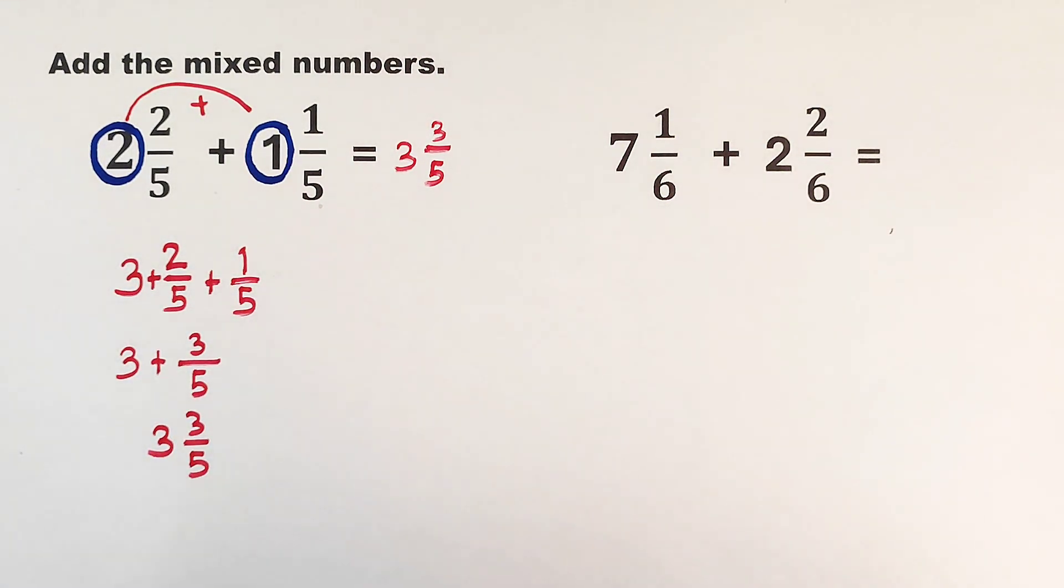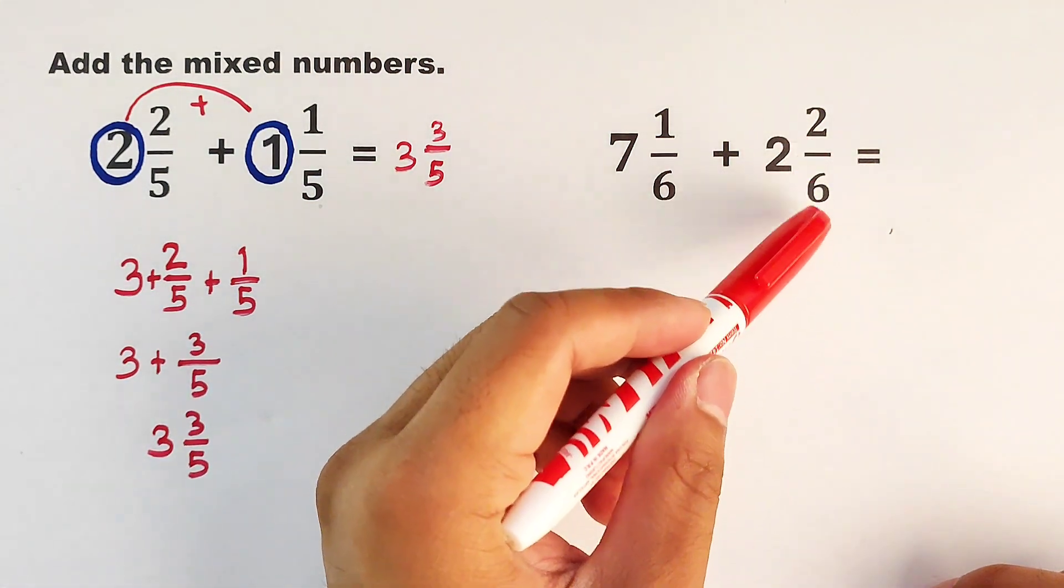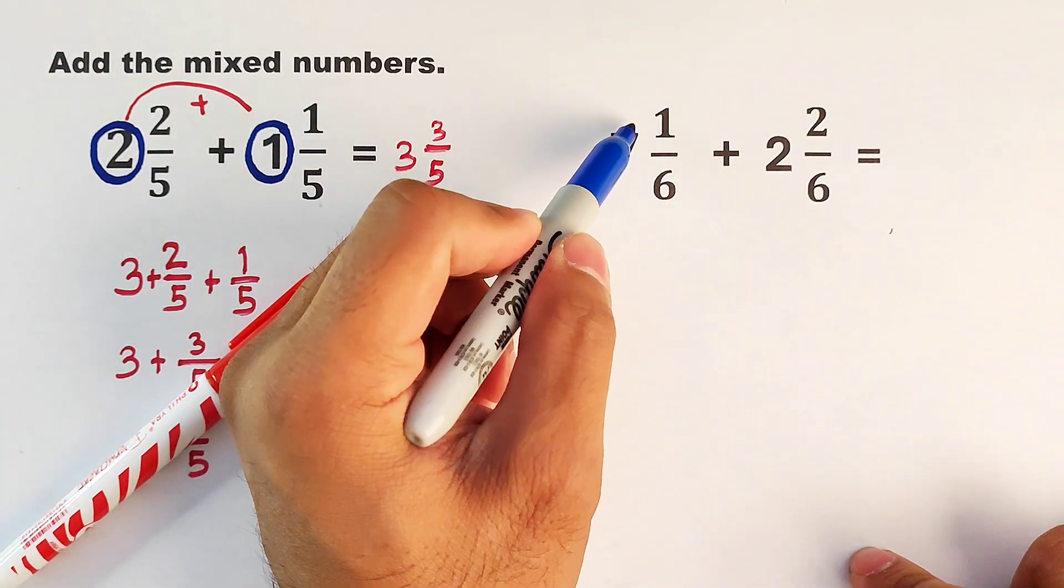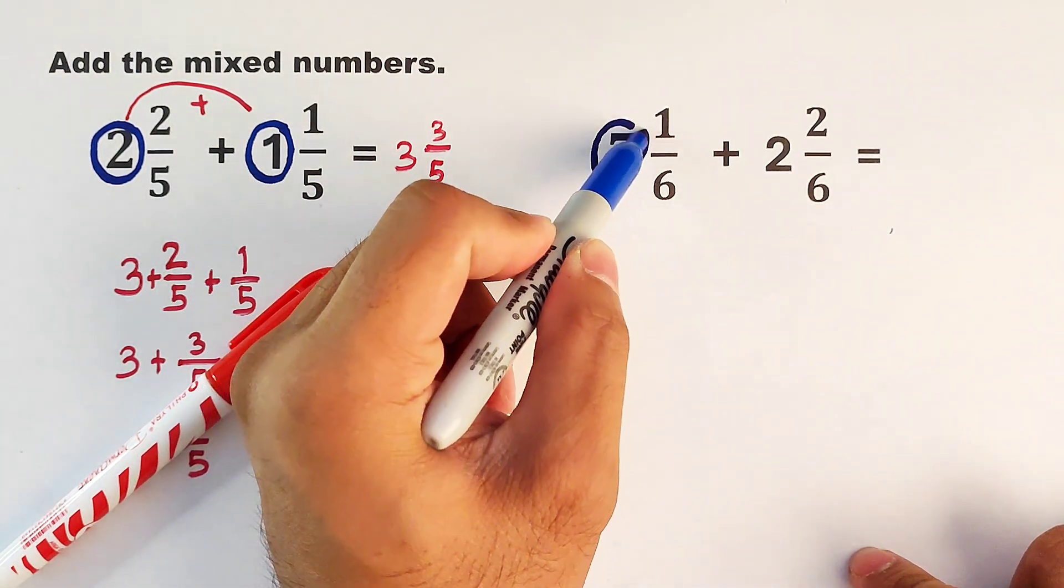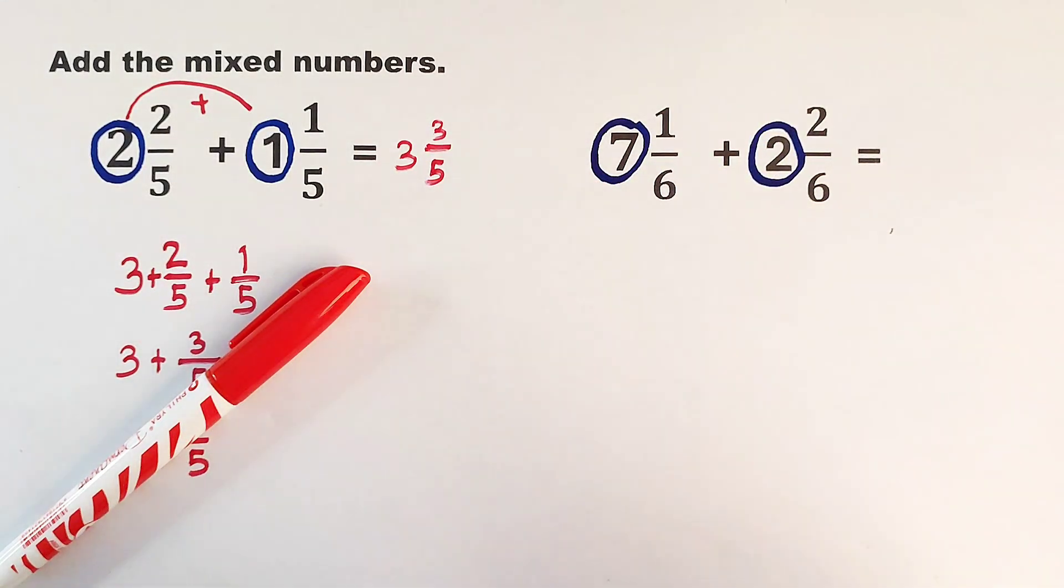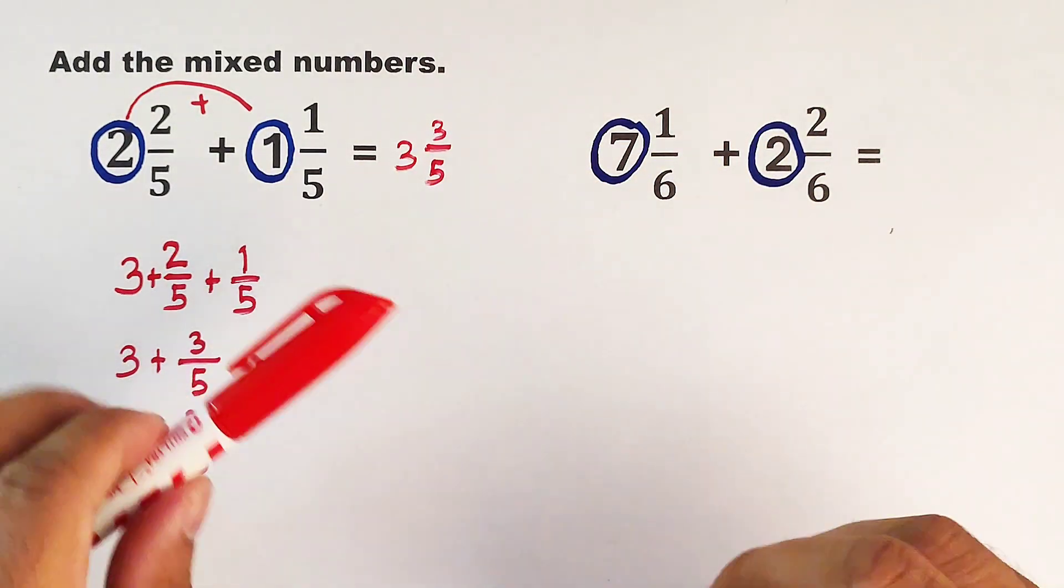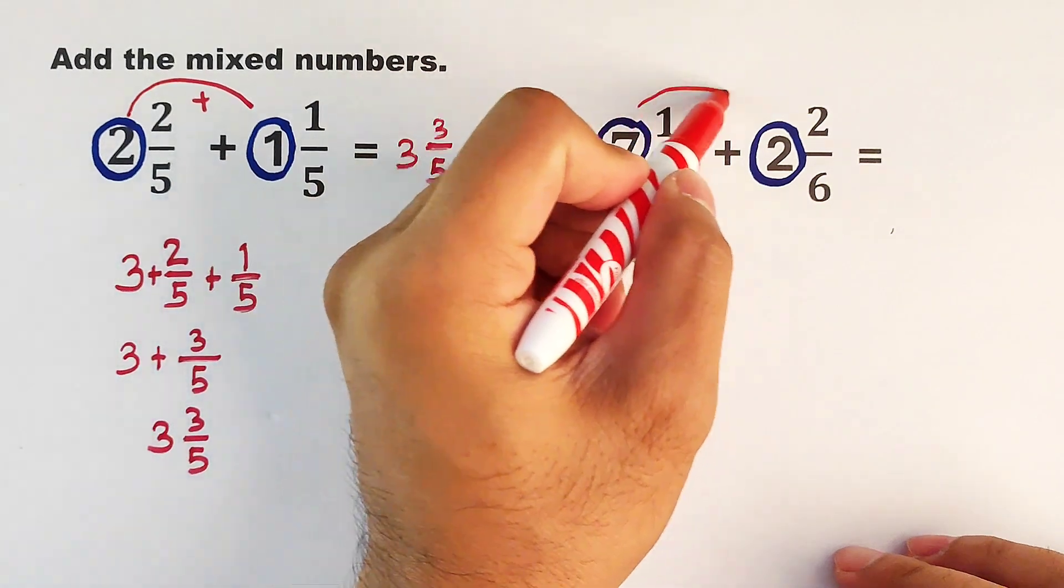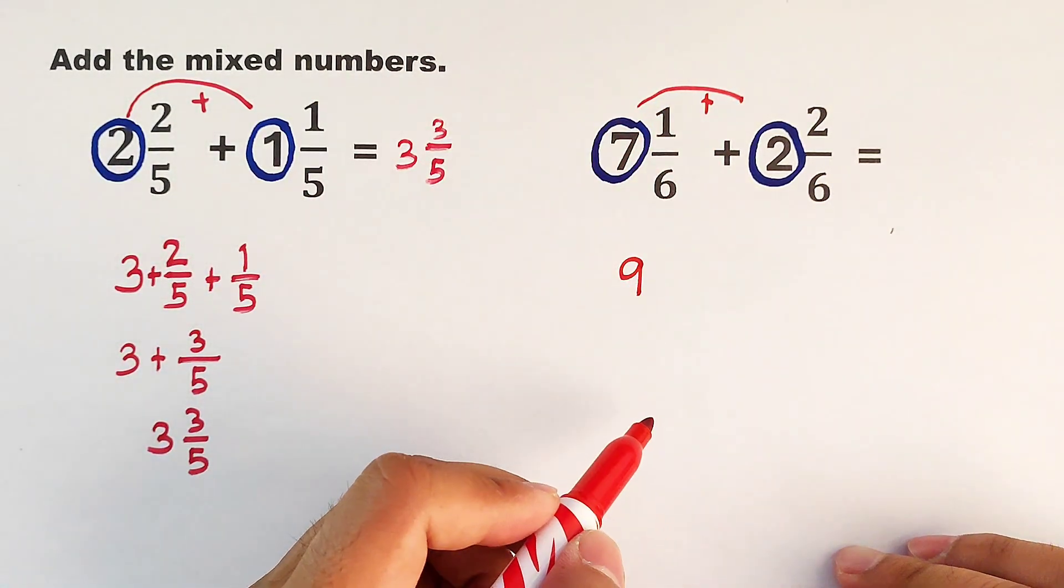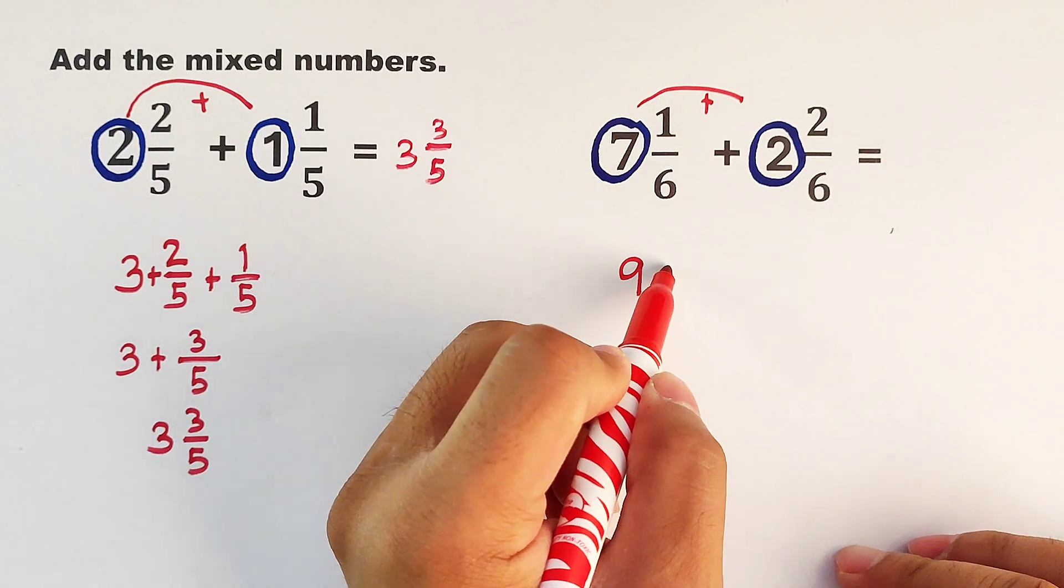What we have now is 7 and 1 over 6 plus 2 and 2 over 6. Same process. We will add separately the whole numbers and the fractions. We will start with this. We have 7 and 2. So what is 7 plus 2, guys? That would be equal to 9. And now, let's proceed with the fractions.